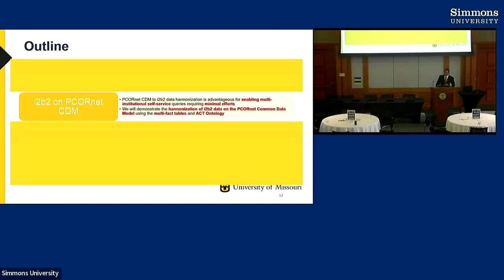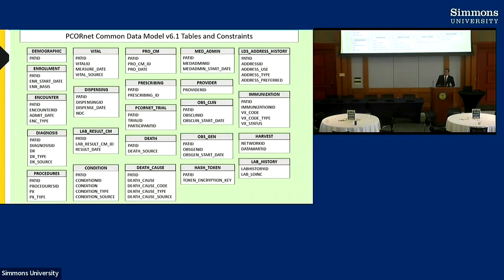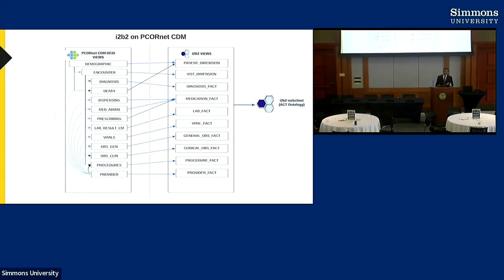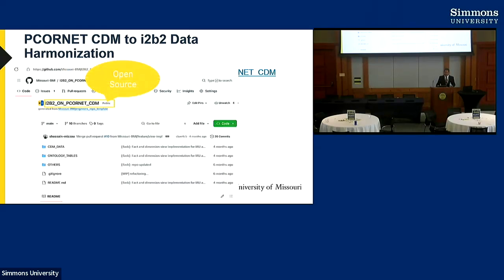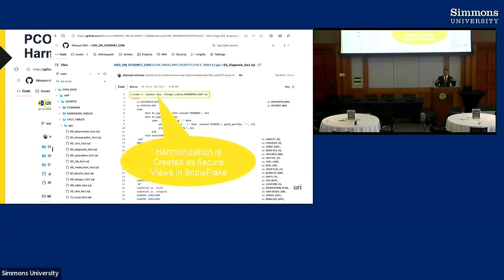i2b2 on the PCORnet common data model: PCORnet CDM has a similar set of tables to OMOP, just organized differently. We mapped those tables to the i2b2 multi-fact views — and I mean truly implemented as views, not physical tables — though it can be created as a transformation into a physical table using the same script. The script is available in our University of Missouri GitHub repository, which is public. There's also a separate repo for OMOP-to-i2b2 harmonization.